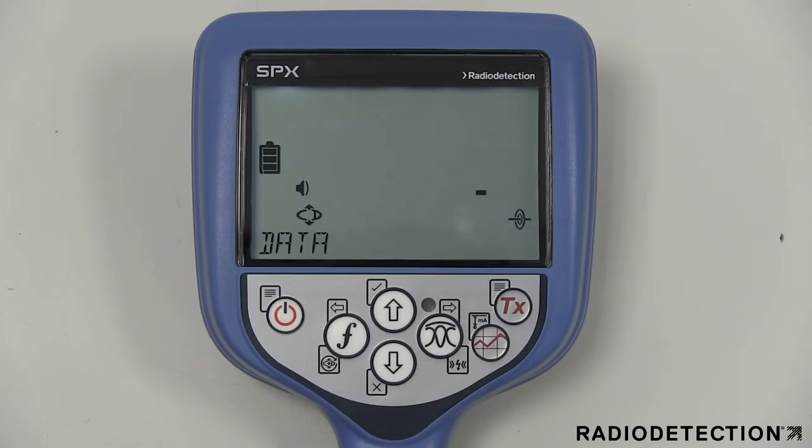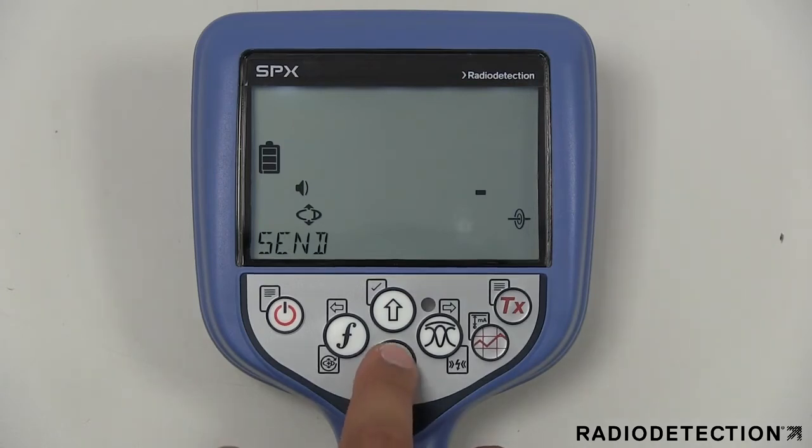The data menu option allows you to delete or send saved survey measurement data to a connected device via a Bluetooth connection. The exit option can be used to disable the communication channel.